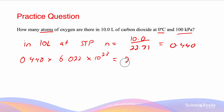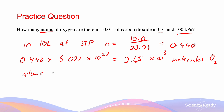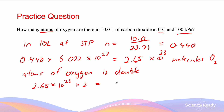From this we get 2.65 × 10²³ molecules of O2. However, the question asks for atoms of oxygen. In every molecule of O2 there are two atoms of oxygen because oxygen gas is a diatomic molecule. So the number of atoms is double: 2.65 × 10²³ × 2 equals 5.30 × 10²³ atoms, given to three significant figures.